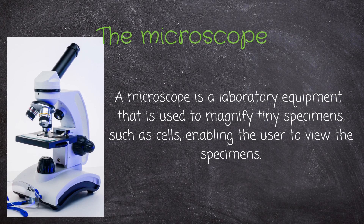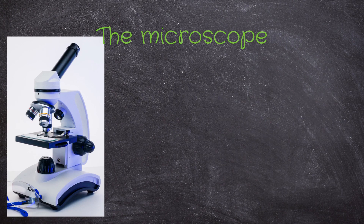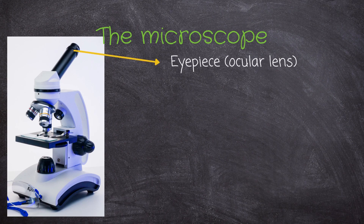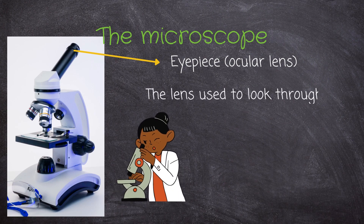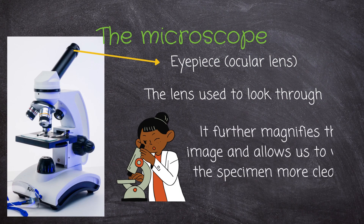Starting off with the eyepiece, or ocular lens. This is the lens that the user is going to be looking through, as seen in the diagram. Its function is to further magnify the image, allowing us to view the specimen more clearly.